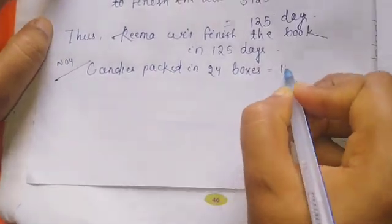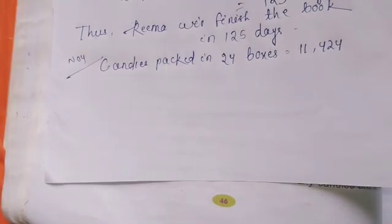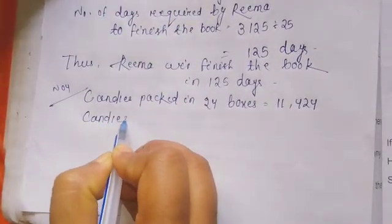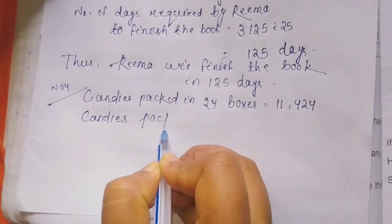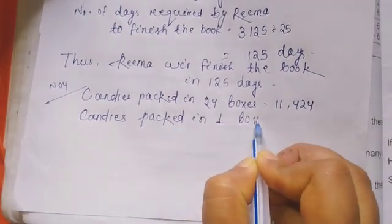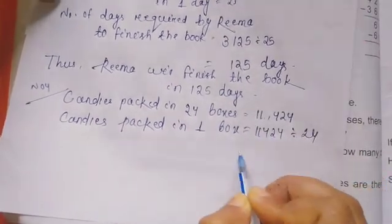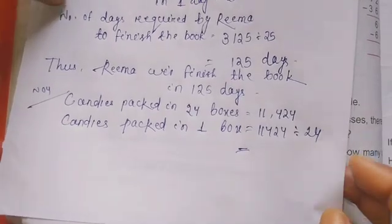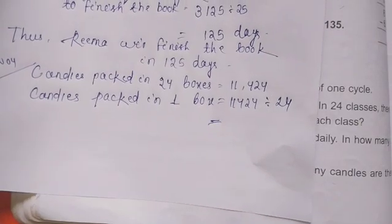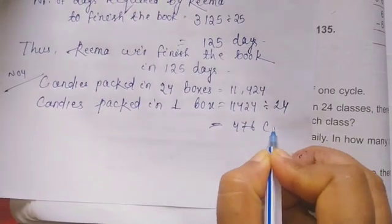Candles packed in 1 box equals 11,424 divided by 24, which equals 476 candles.